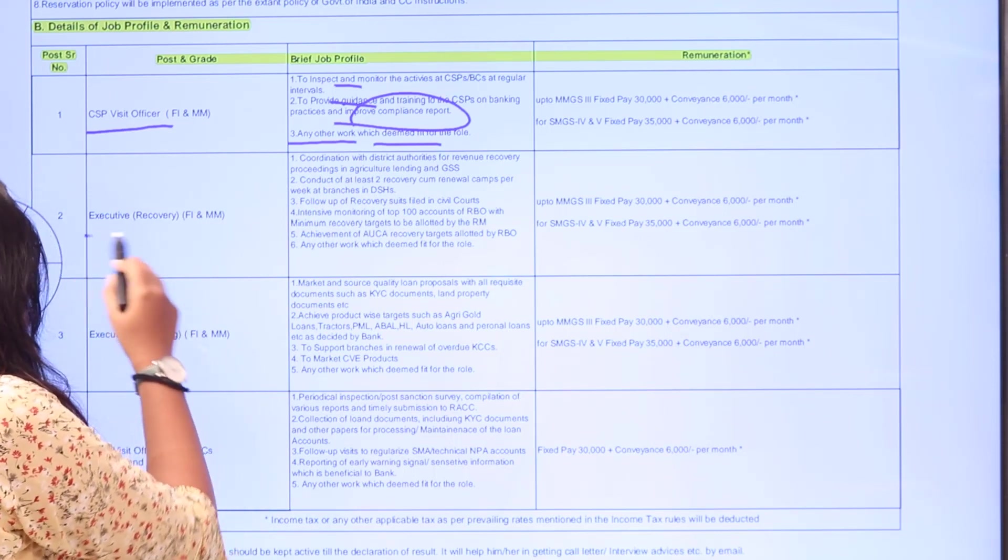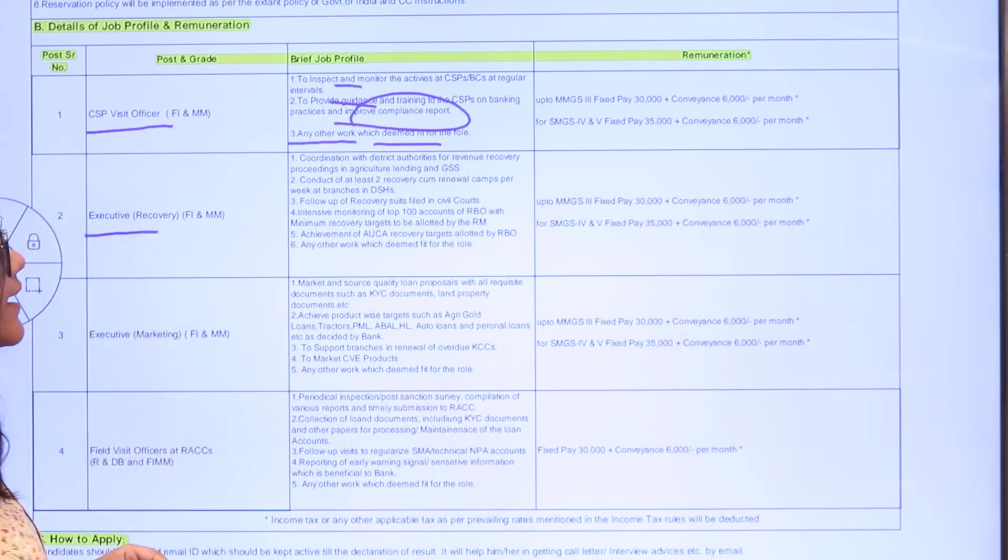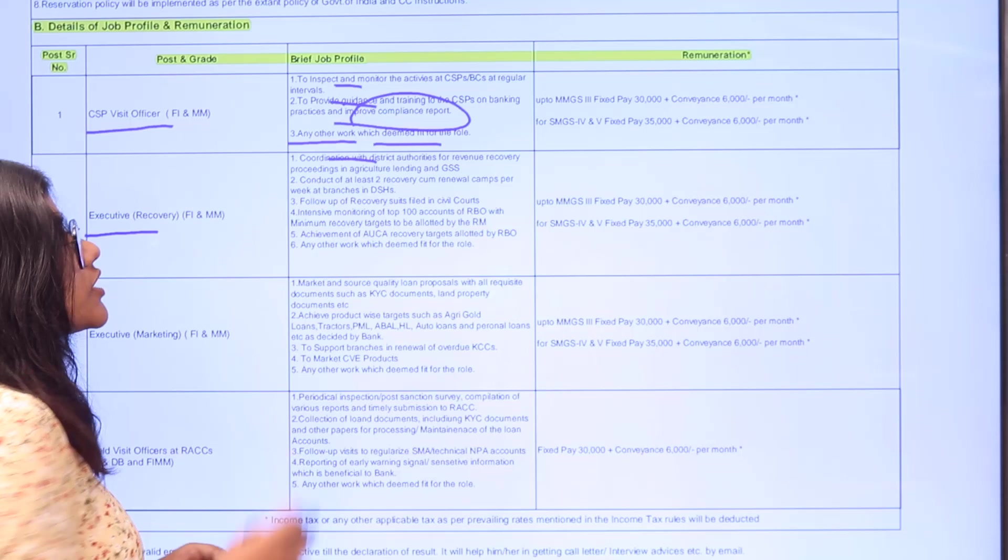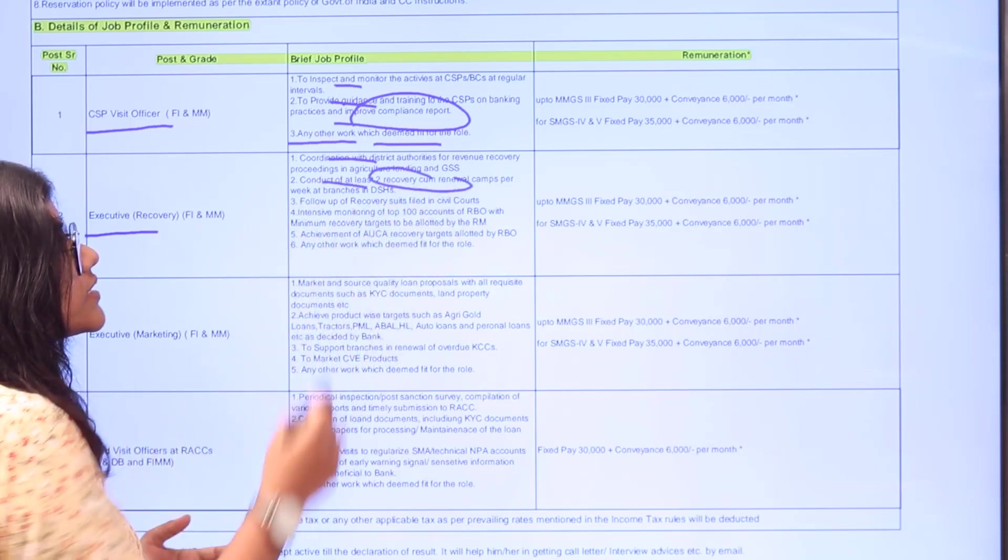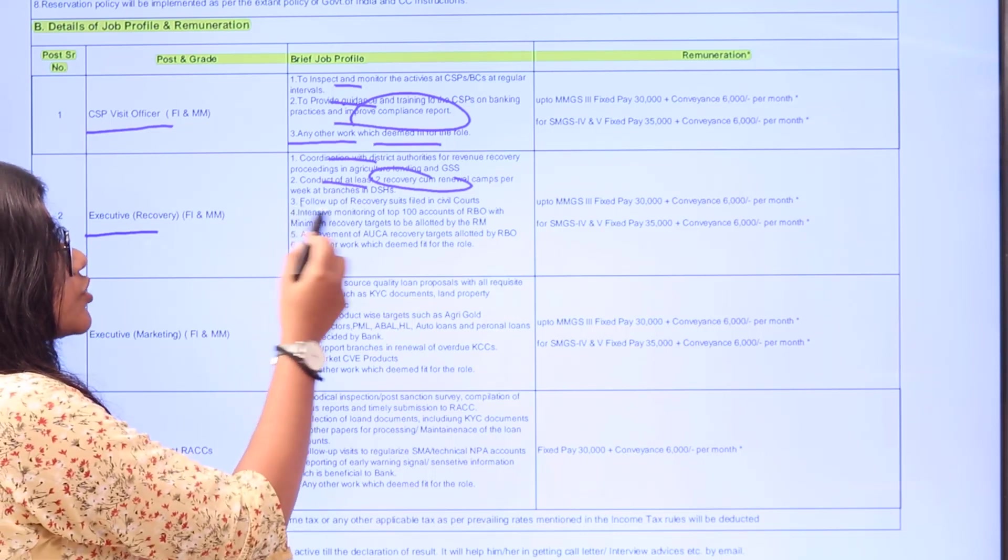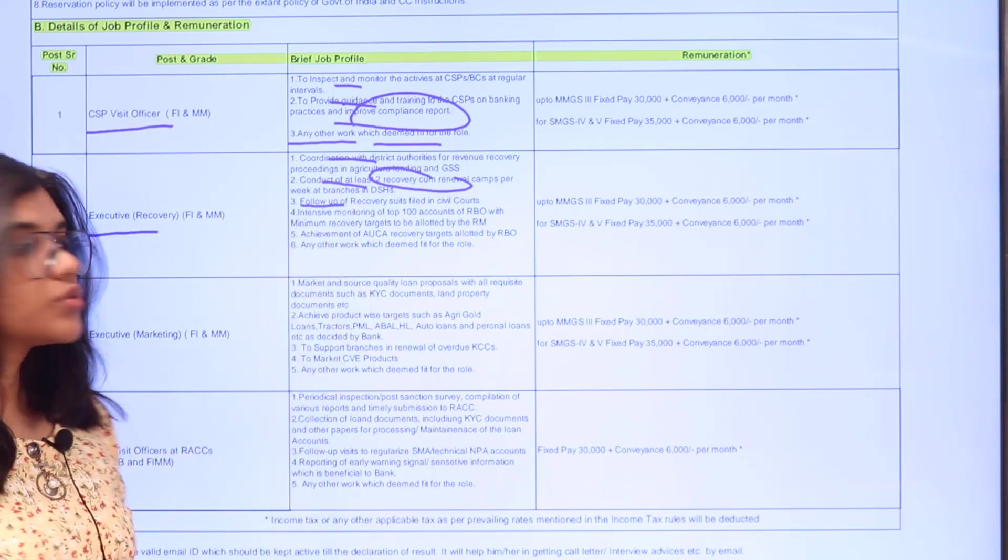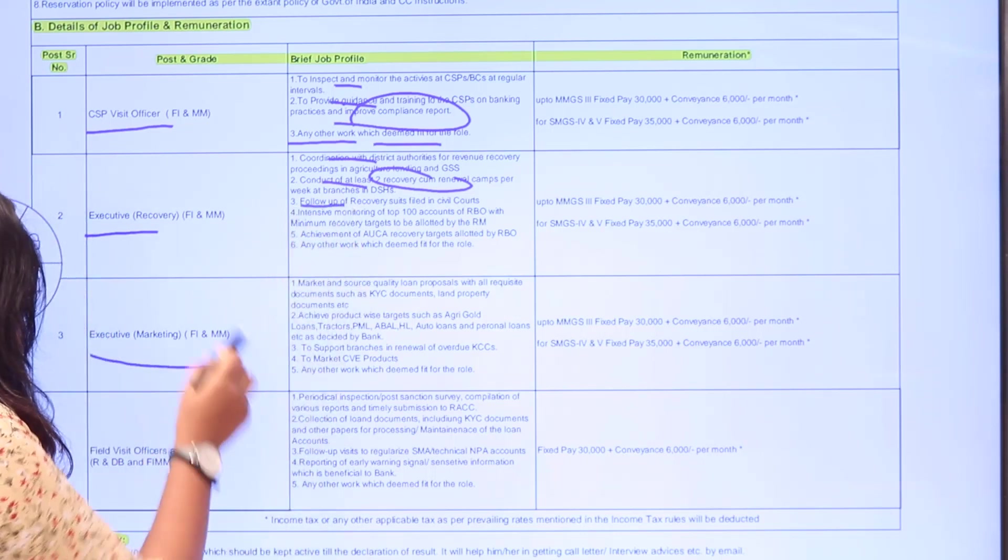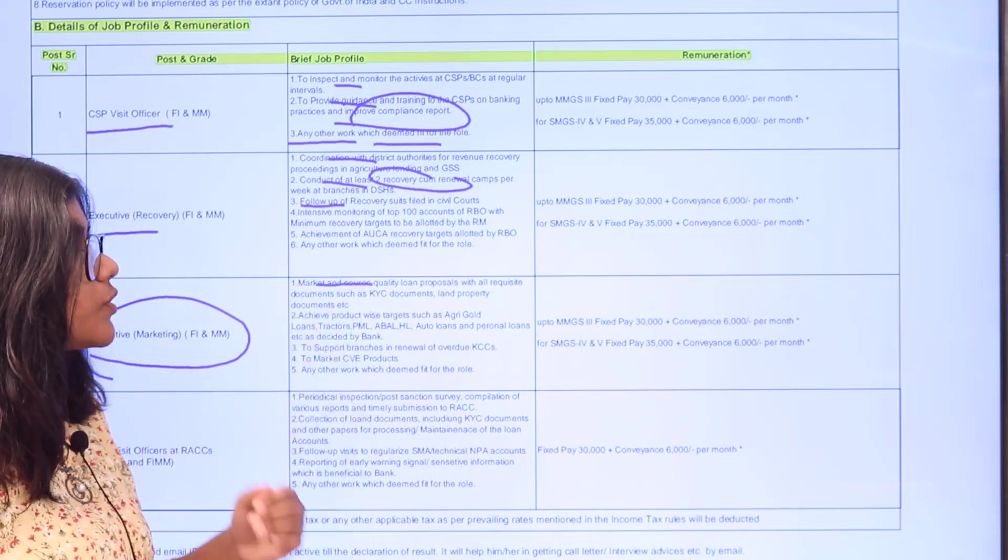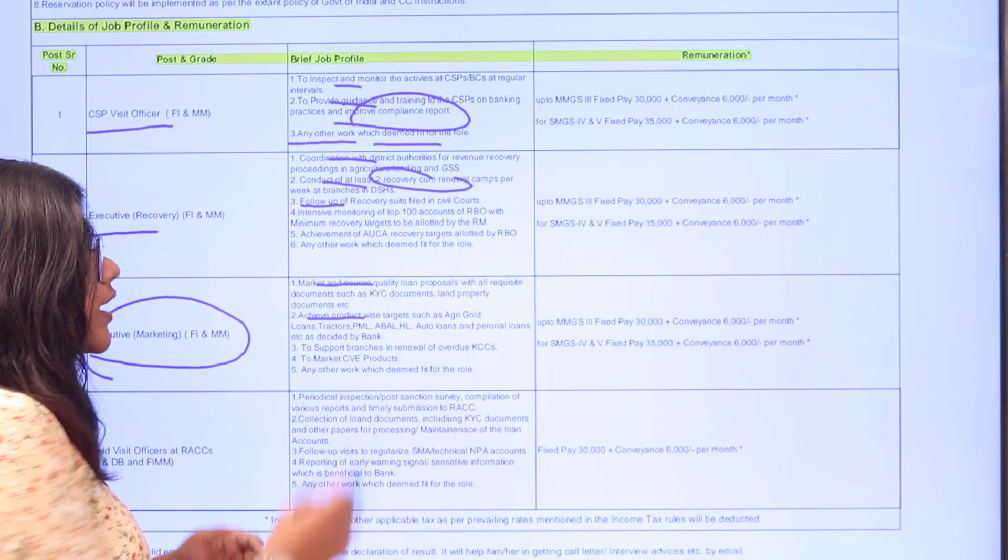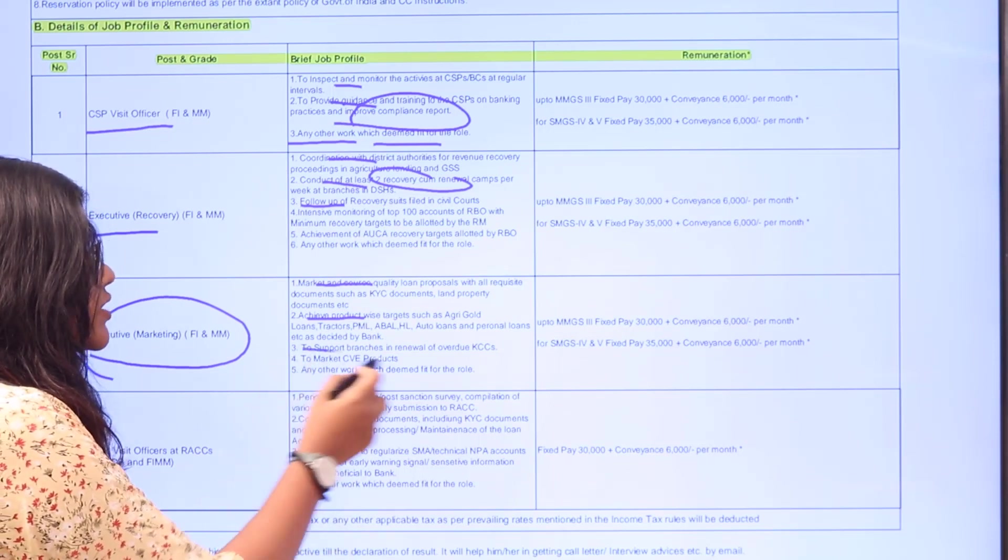For Executive Recovery FI and MM, the role involves coordination with district authorities for revenue recovery, conducting at least two recovery renewal camps, and follow-up of recovery suits. For Executive Marketing FI and MM, you need to market and source quality loan proposals, achieve product-wise targets, and support branches in renewals or overdue.